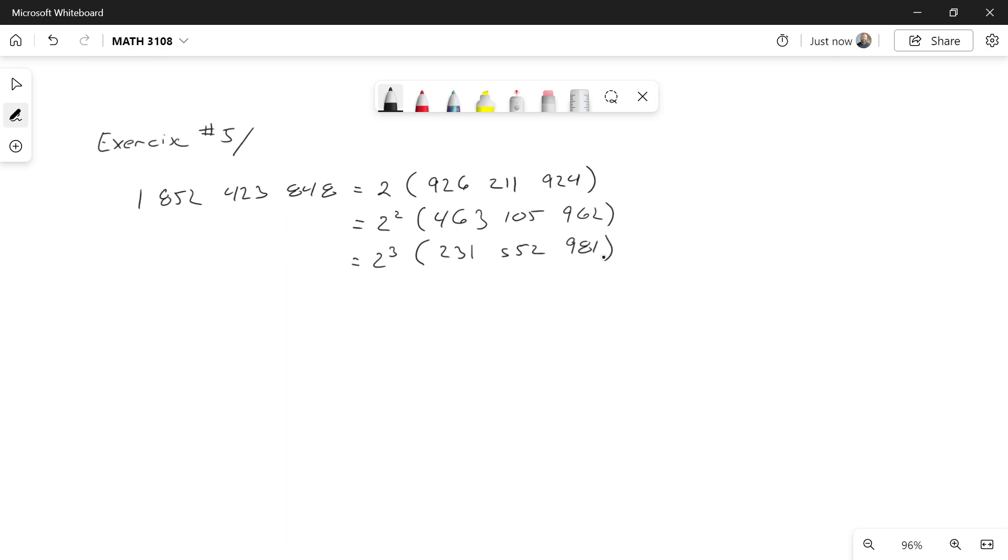So now it's not an even number. So I can't factor out a 2. I can try 3. And 3 is going to be a factor here. So this is 2 to the 3 times 3 times what's left when I factor out a 3. Well, that is 77,184,327.